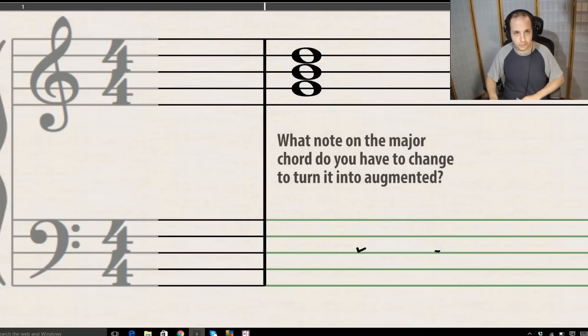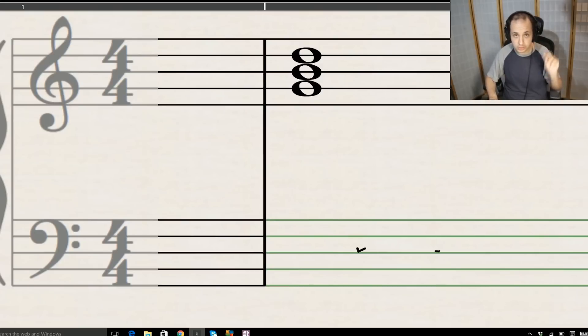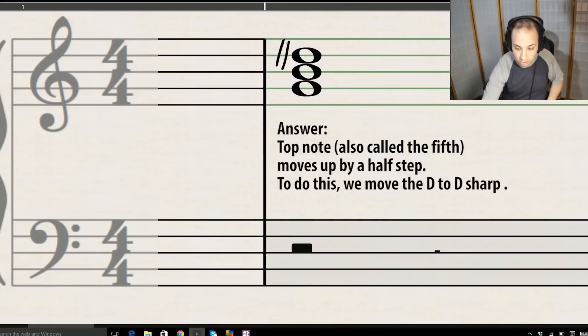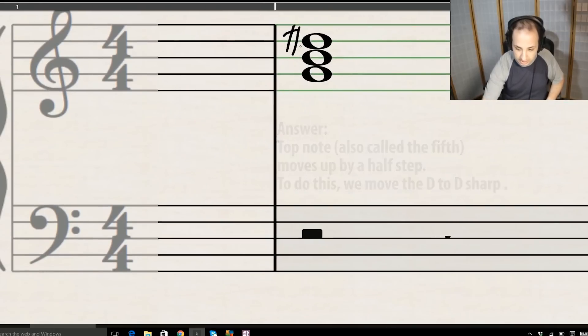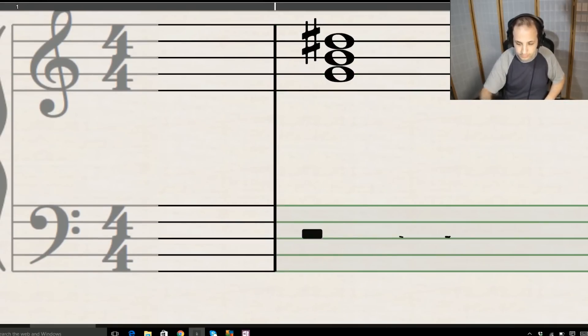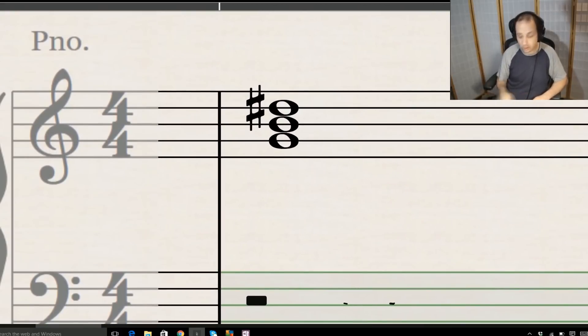So I have a question, write this in the comments. What note, if I'm in a major chord, do I have to change to get to an augmented chord if I'm in major? Remember major sounds happy? You have to move the top one, and you have to move it up what we call a half step, and that will create our augmented triad. So that's what our G augmented triad would look like.